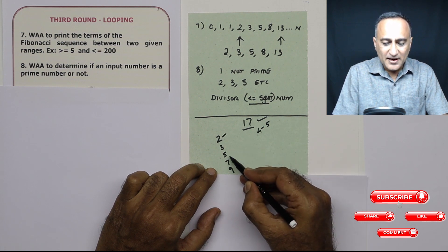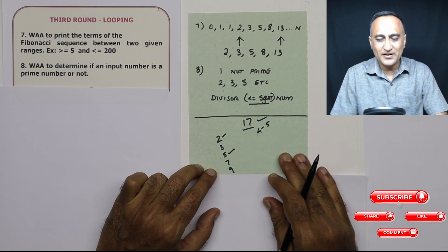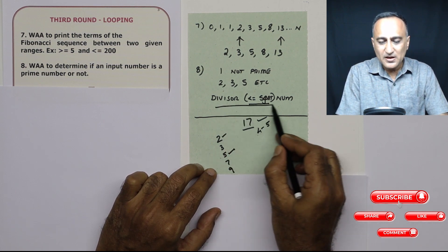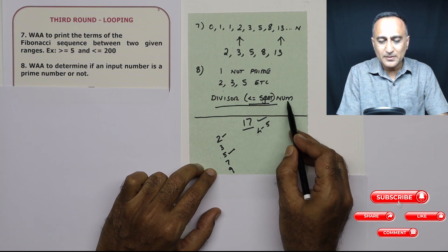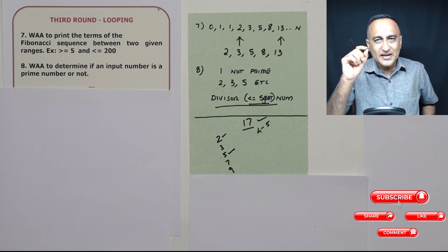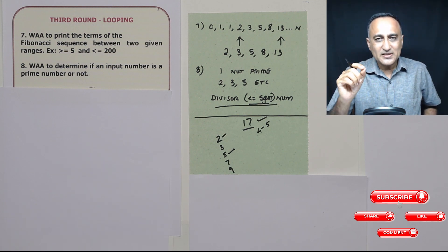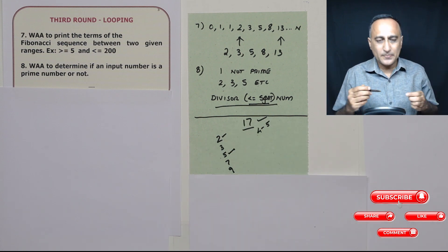So your condition can be: as long as the divisor is less than or equal to the square root of that number, keep dividing that number. If the remainder happens to be zero, you will say that the number is not a prime number and stop. If you have come out of the loop, that means it must be a prime number.